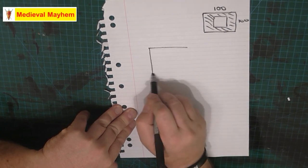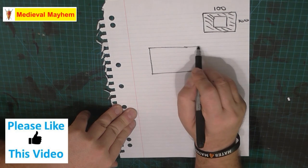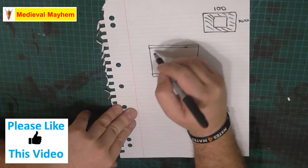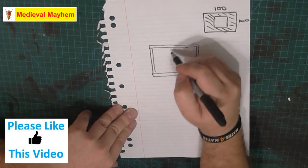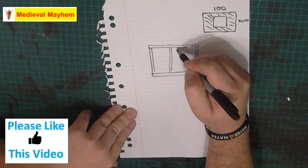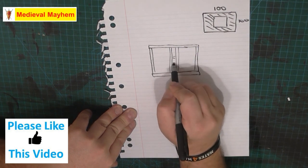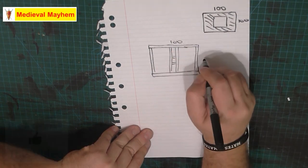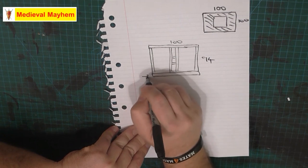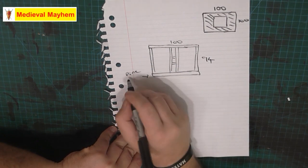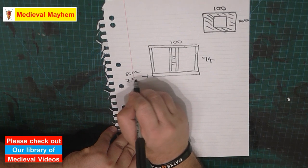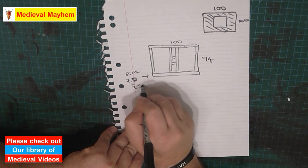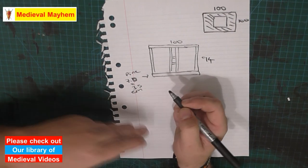So we're going to have a base plate which is going to look something like this. Alright, so each of these will be 100. This will be 94. I'm using pine from my hardware store which is 7 by 3.5 centimeter. I don't know what that is in inches. Sorry.